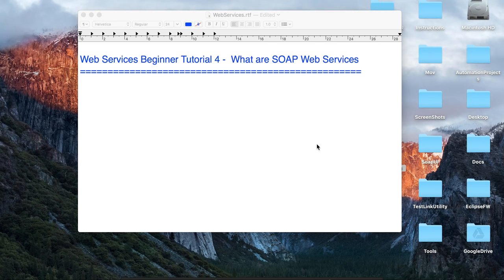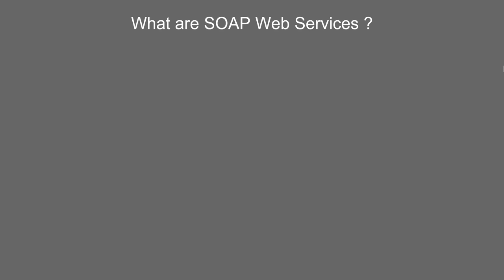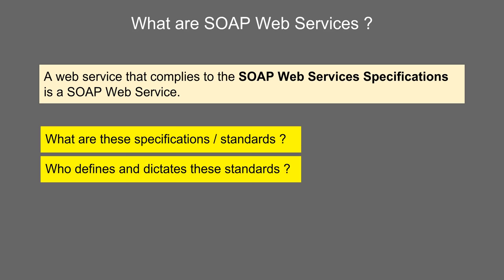Hello and welcome to this session on web services. Today we are going to learn what SOAP web services are and what are the rules or guidelines that make a web service a SOAP web service. Any web service that follows some guidelines laid down by SOAP web services specifications is called a SOAP web service. There are a set of rules, and if any web service complies with those rules, we can say that web service is a SOAP web service.